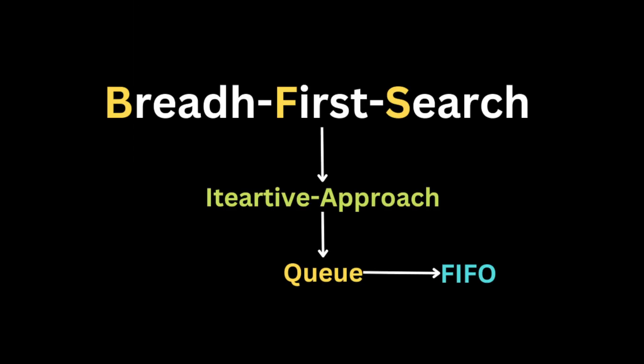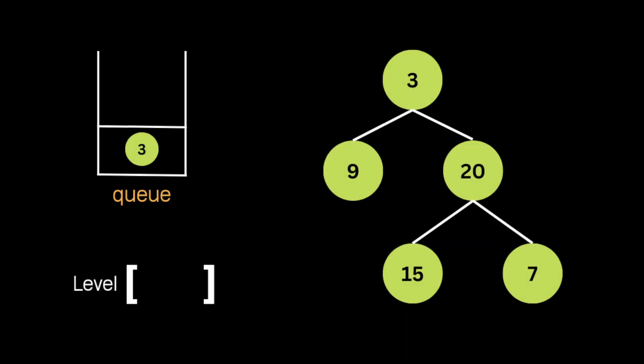To solve this problem we're going to use the breadth-first search algorithm with the iterative approach. The first thing we're going to do is create a queue to store the nodes we find. We'll use the queue to tell us how many nodes are at each level, and take advantage of its FIFO technique — first in, first out.